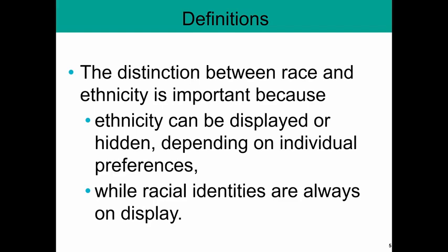Ethnicity can be either displayed or hidden, depending on your individual preference. You can hide your religion, you can hide how you eat, you can even hide the way you speak. You might not like that, but if it comes down to your physical safety, you can do it. With racial identities, we are talking about what your body physically looks like, so it's dramatically harder to hide a racial identity than it is to hide an ethnic identity.